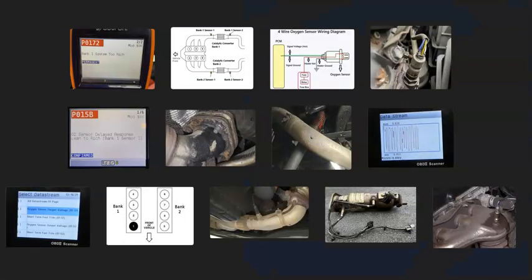That's a basic overview of how to go about fixing a vehicle with a P015B code. If you have anything to add, comment below. If you have questions, ask and I'll try to answer them. If this video helped you, please click like, subscribe, and have a good day.